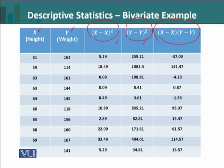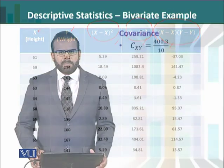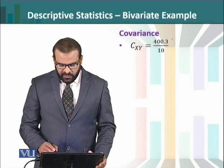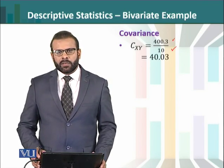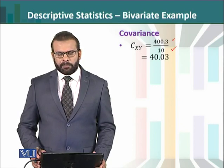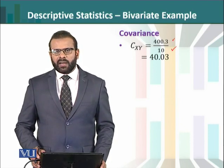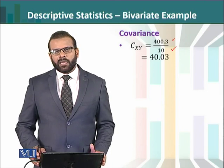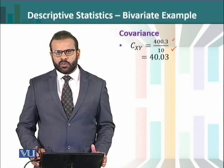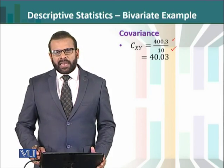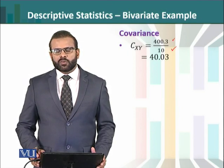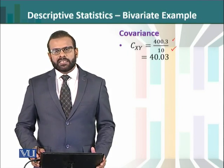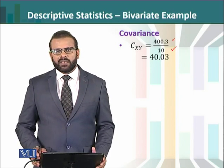These three calculations will give us the results for covariance and correlation. If we look at the covariance result, the sum of cross products of deviations is 400.3 and the total number of observations is 10, giving a result of 40.03, which is a positive number indicating a positive relation between the variables. However, this measure is unit dependent — if the units of the variables change, the result of the covariance will also change. Additionally, covariance can range from minus infinity to plus infinity.